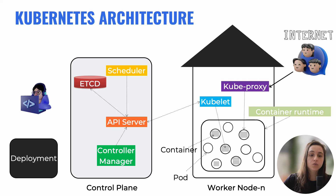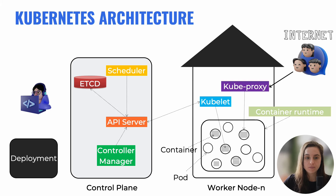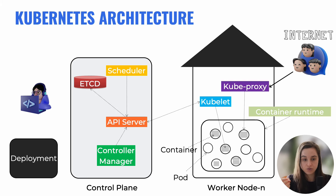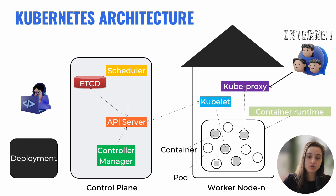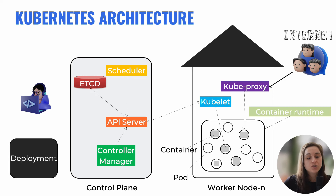At a high level, the control plane controls and coordinates the cluster while the worker nodes execute and run the actual workloads. This division of responsibilities ensures efficient and scalable management of containerized applications across the Kubernetes cluster. Worker nodes have several containers inside pods, and there is a control plane — the brain that manages everything.